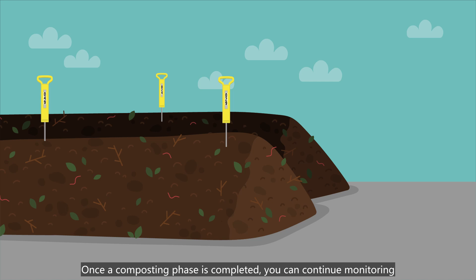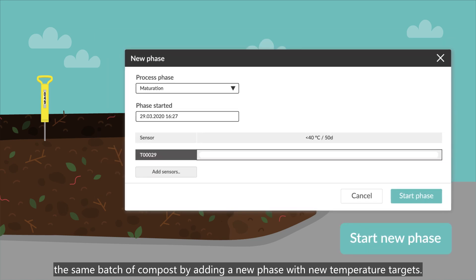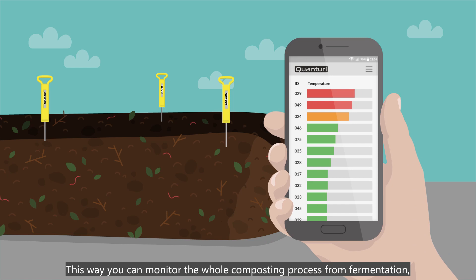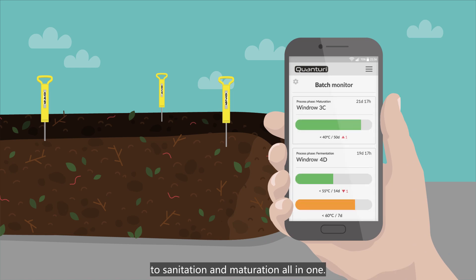Once the composting phase is completed, you can continue monitoring the same batch of compost by adding a new phase with new temperature targets. This way you can monitor the whole composting process from fermentation to sanitation and maturation all in one.